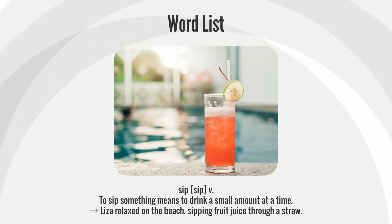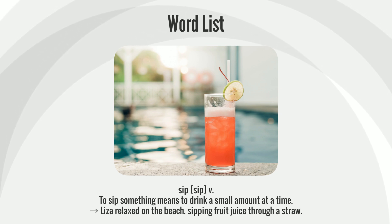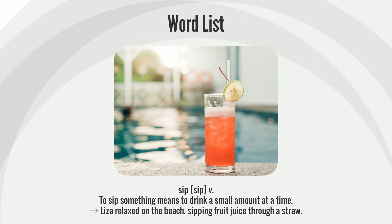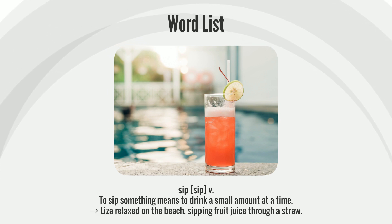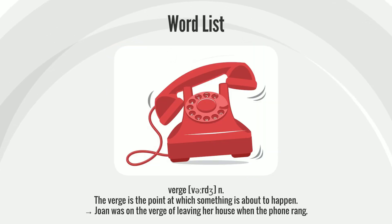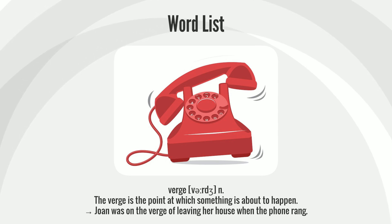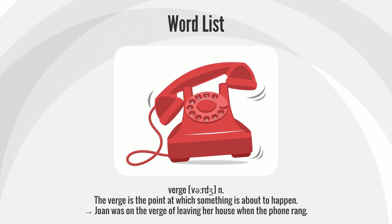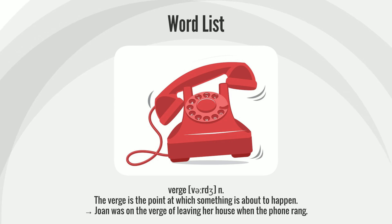Sip: To sip something means to drink a small amount at a time. Liza relaxed on the beach sipping fruit juice through a straw. Verge: The verge is the point at which something is about to happen. Joan was on the verge of leaving her house when the phone rang.